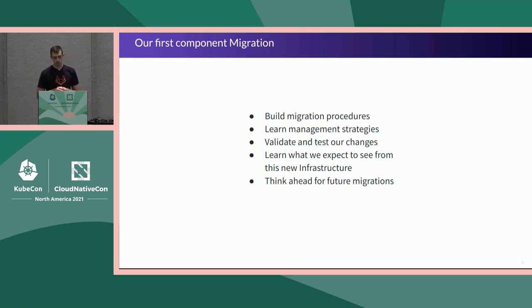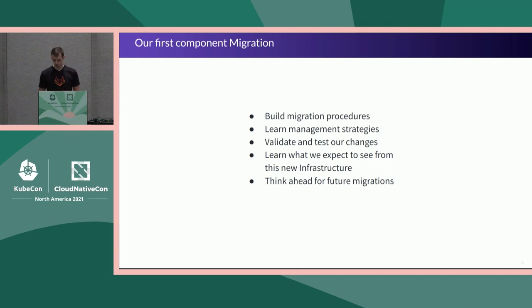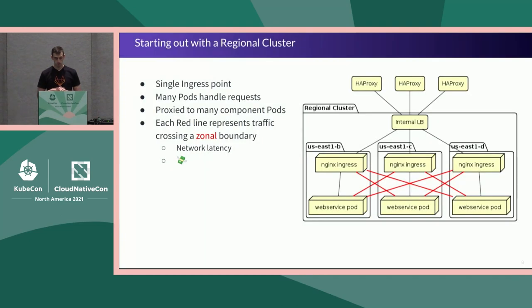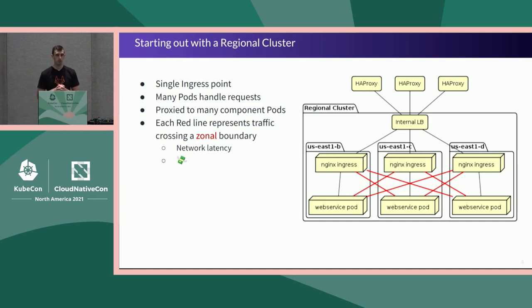One of the problems we encountered — and the heart of this talk — is something we learned about cloud costs when you set up a regional cluster. When we got started with Kubernetes, we went the route of using GKE and used their recommendations for setting up production-worthy clusters. So we landed with a regional cluster deployed using all the zones inside of that region.